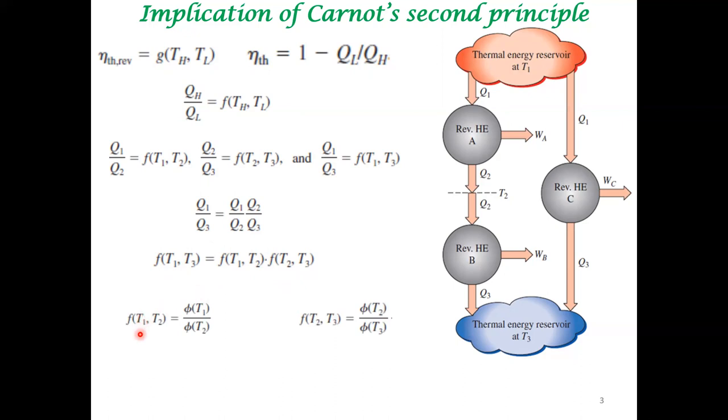This will be satisfied only if the function F of T1, T2 is of this form. Following this, what Kelvin suggested, this is an important argument, because I can write Q1 divided by Q3 as phi T1 divided by phi T3.